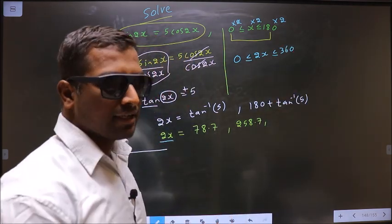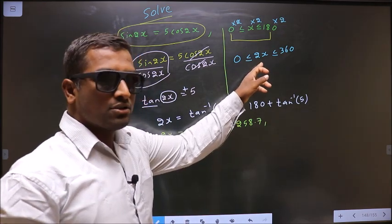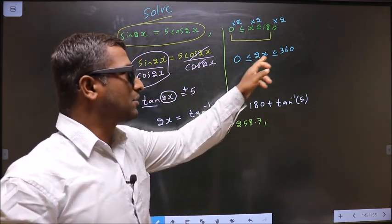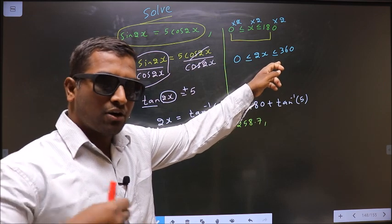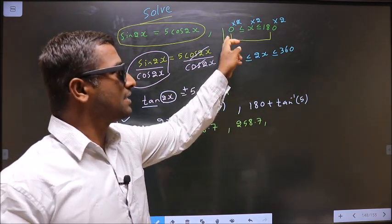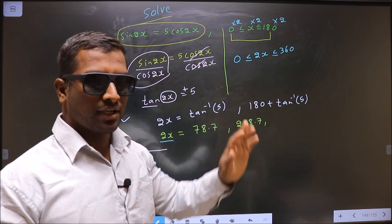Now, I am clear. When 2x values lie in this interval 0 to 360, automatically x will lie in the interval 0 to 180.